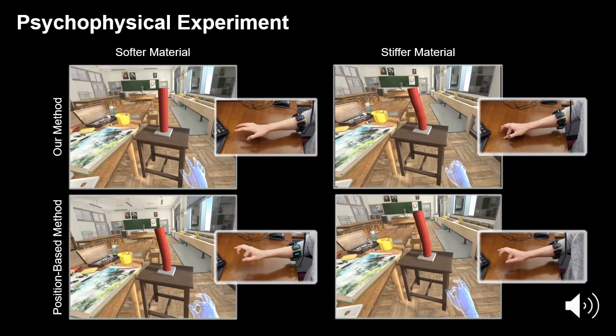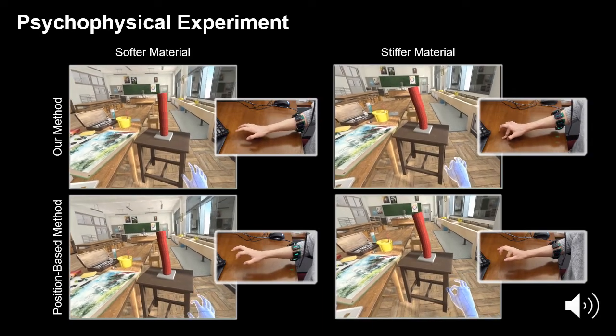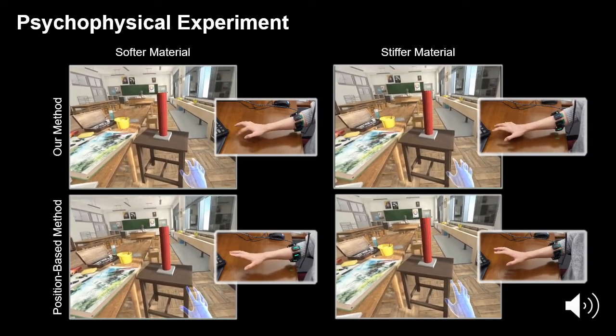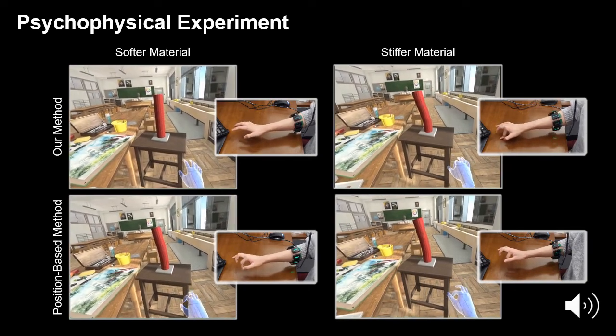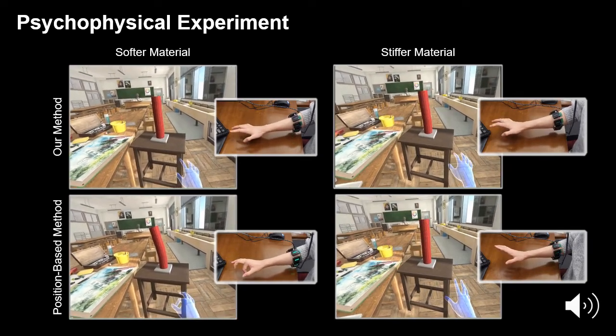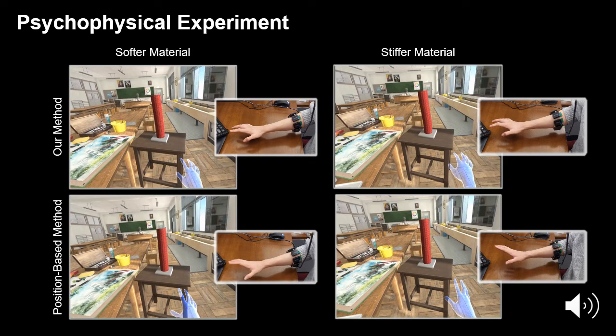We also conducted a psychophysical experiment with 12 participants to validate that, compared to position-based interactions where the haptic modality is absent, our method significantly enhances humans' discrimination threshold of physical properties, such as stiffness and elasticity, in the virtual environment.